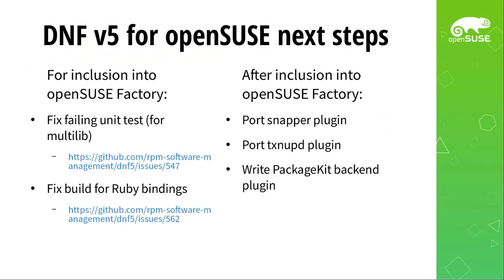That's DNF5. From the perspective of what this means for OpenSUSE, the next step for including it in factory is a single unit test that's failing, which I've talked to the DNF team about and we're going to debug and fix. The other thing, ironically, is the Ruby bindings aren't building — they build fine on Fedora, and I have no idea why they don't build on OpenSUSE. I filed a bug for that, because it would be very ironic if the distribution that uses Ruby for lots of tooling can't use Ruby bindings for their package manager.